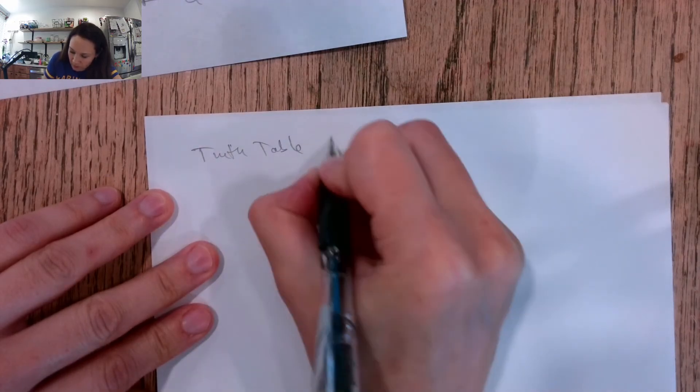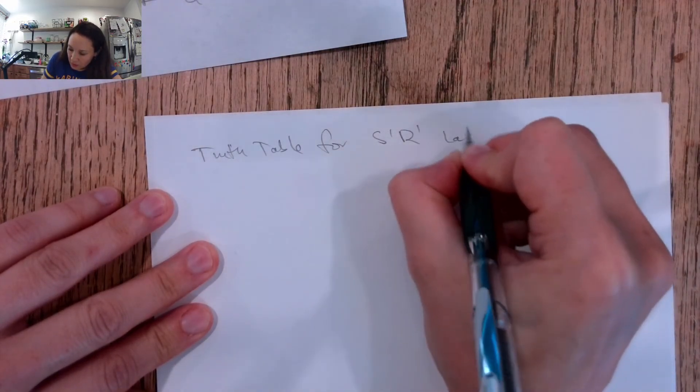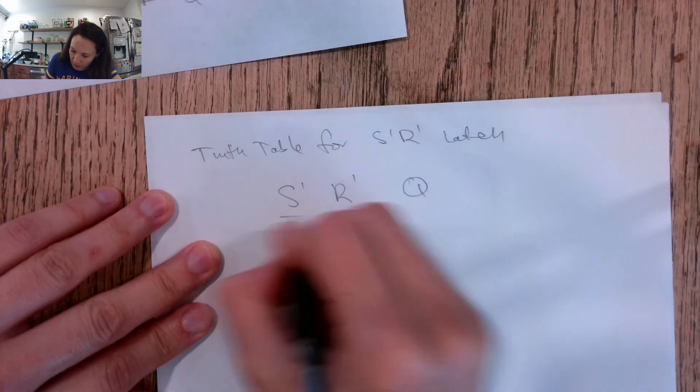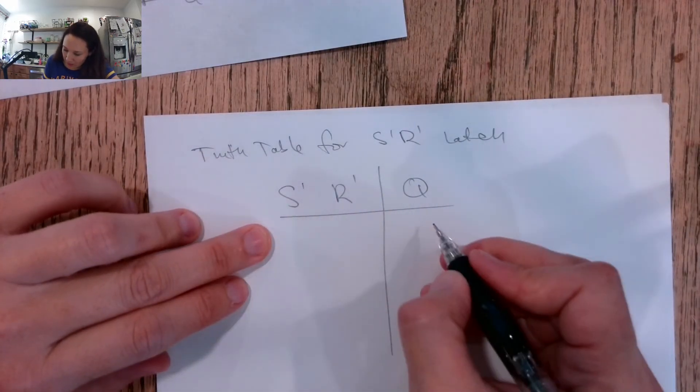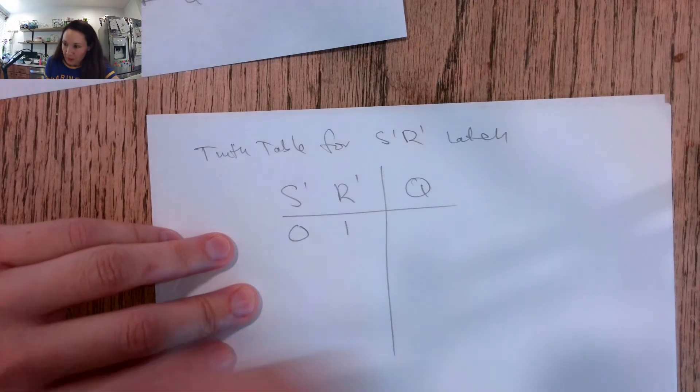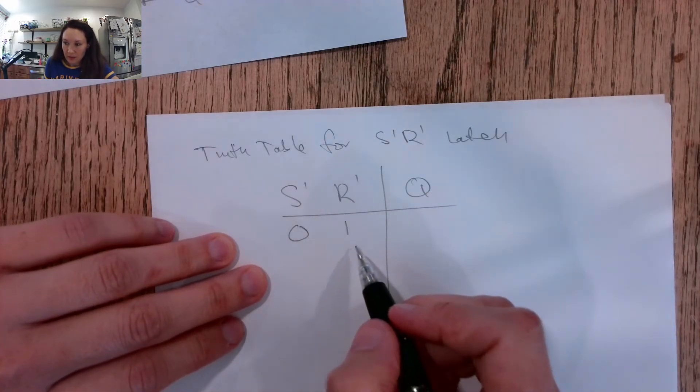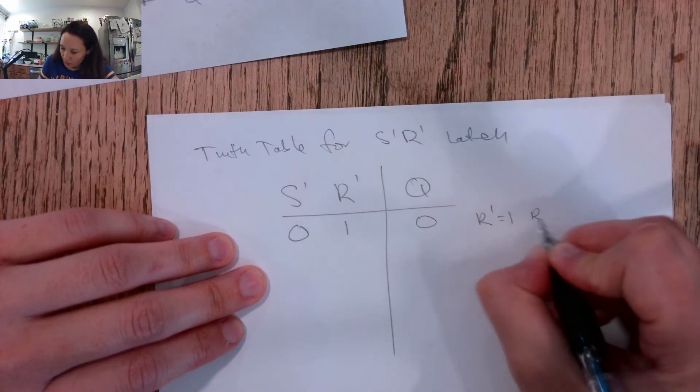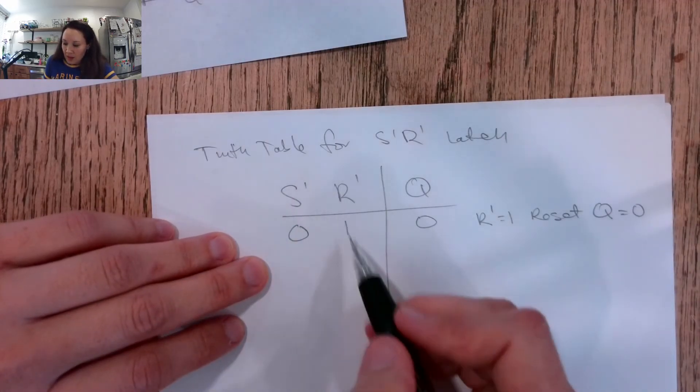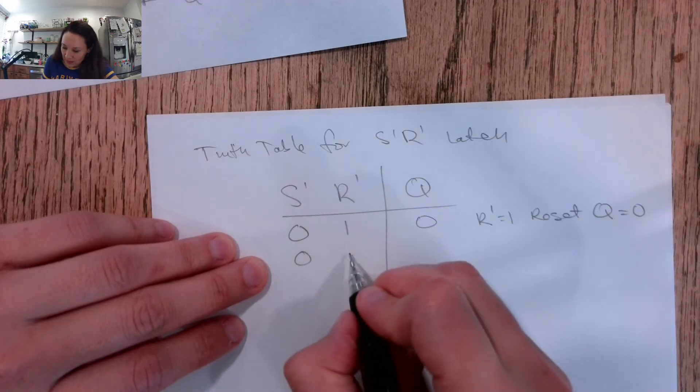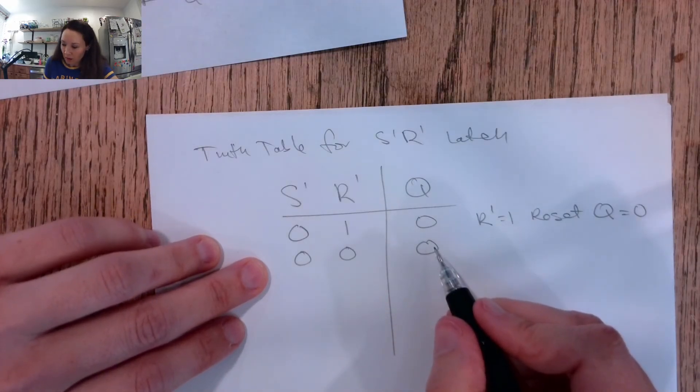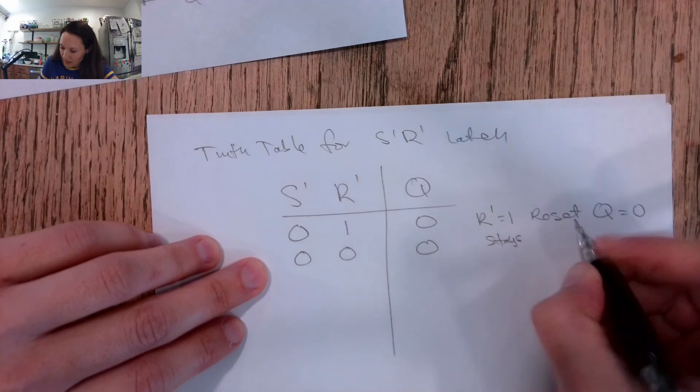Truth table for the S naught R naught latch is like this. We have inputs S naught, R naught, and then we have our output Q. This is going to operate kind of opposite as the last one. So this is going to reset when R naught is high. So R naught equals 1, we're going to reset. So that means we're going to set a zero on our output Q. So then if this gets reset, even after this goes from high to low, we will have latched a value of zero on our output. So this stays reset.